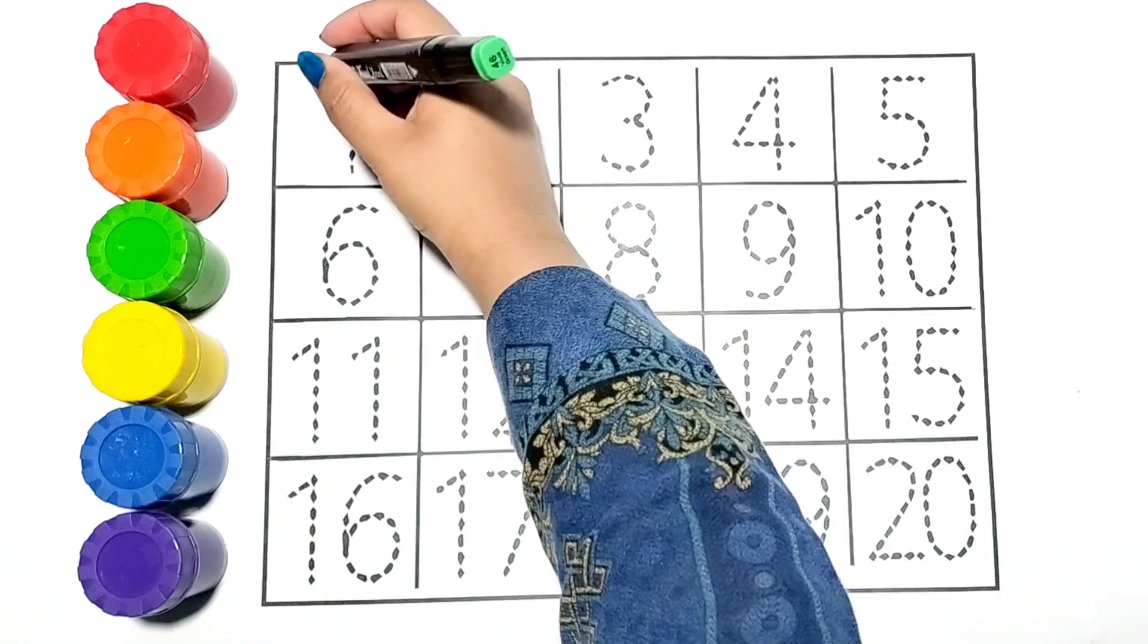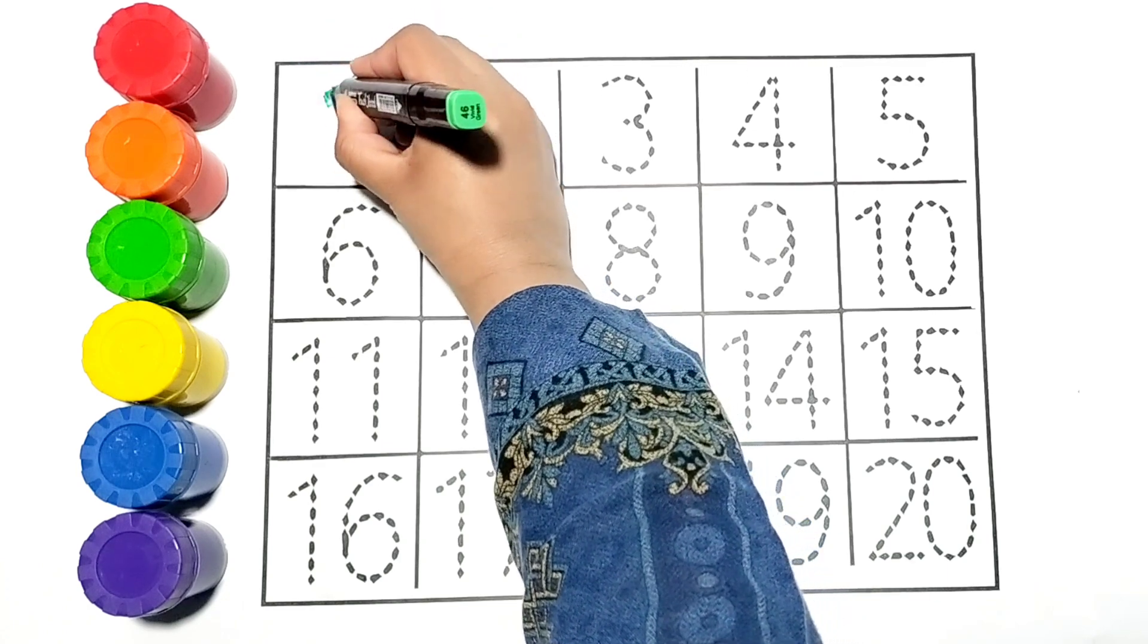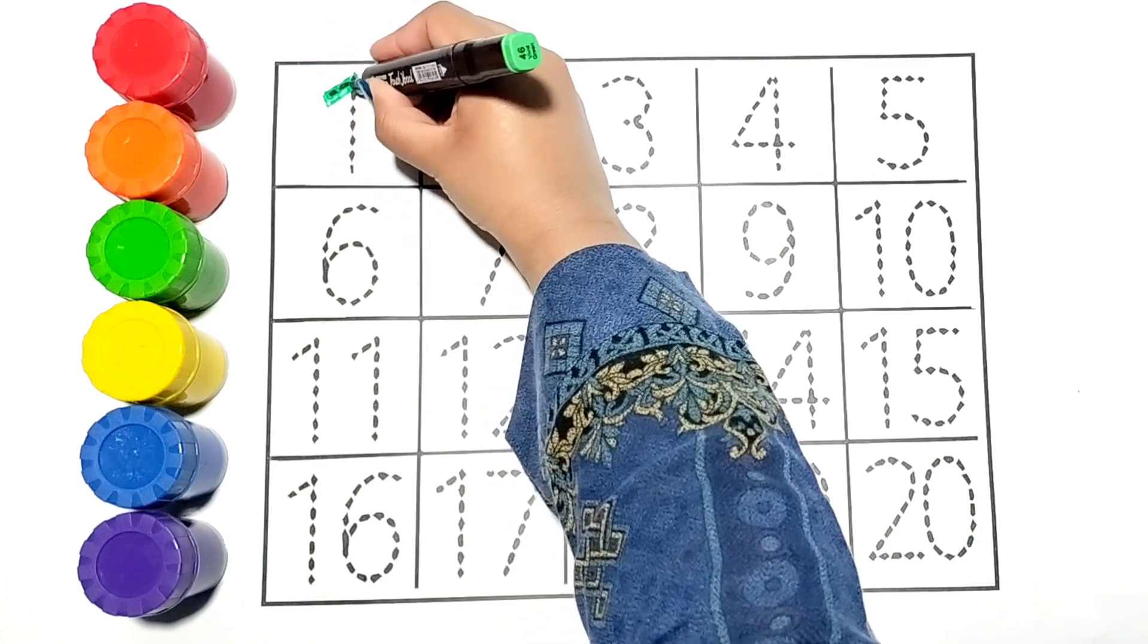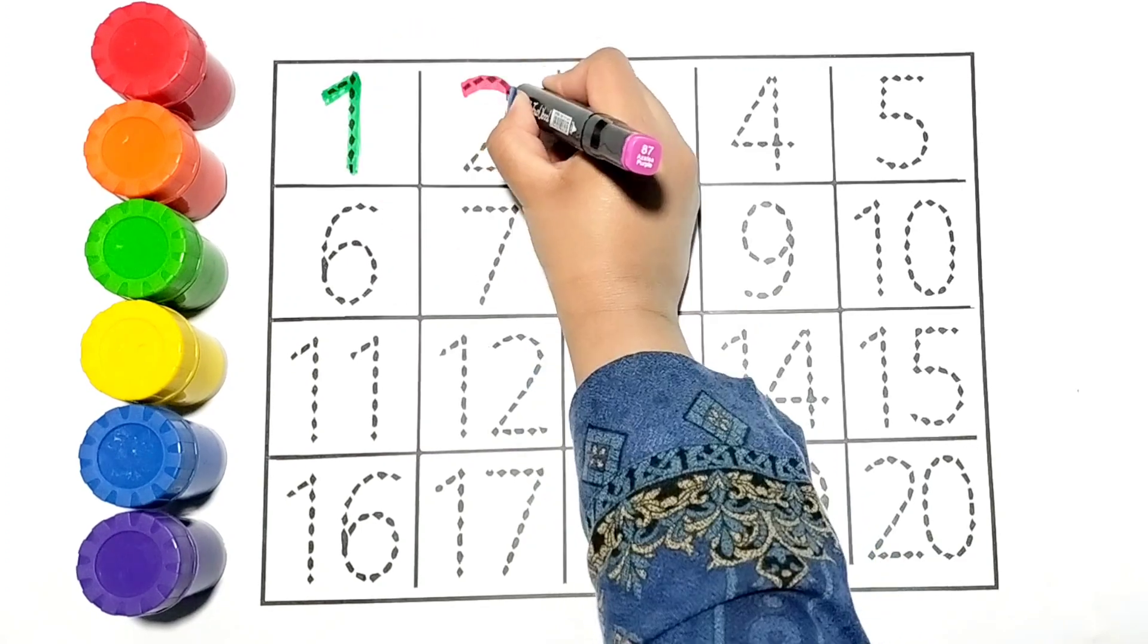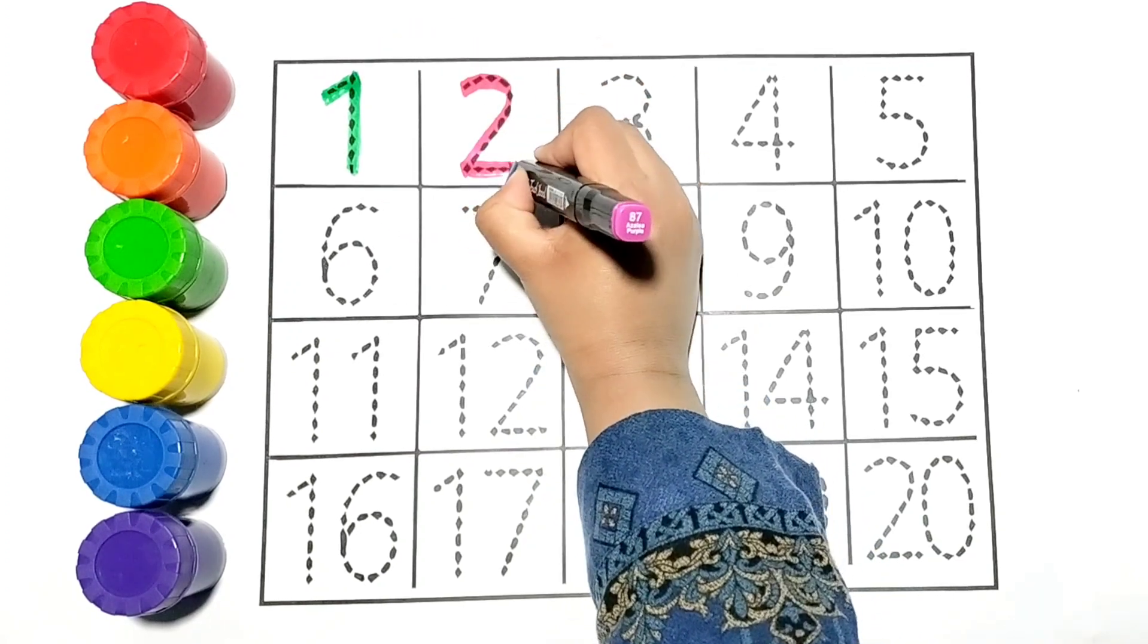Let's write the numbers with colors. 1. I am writing 1 with green color. 2. 2 is in pink color.